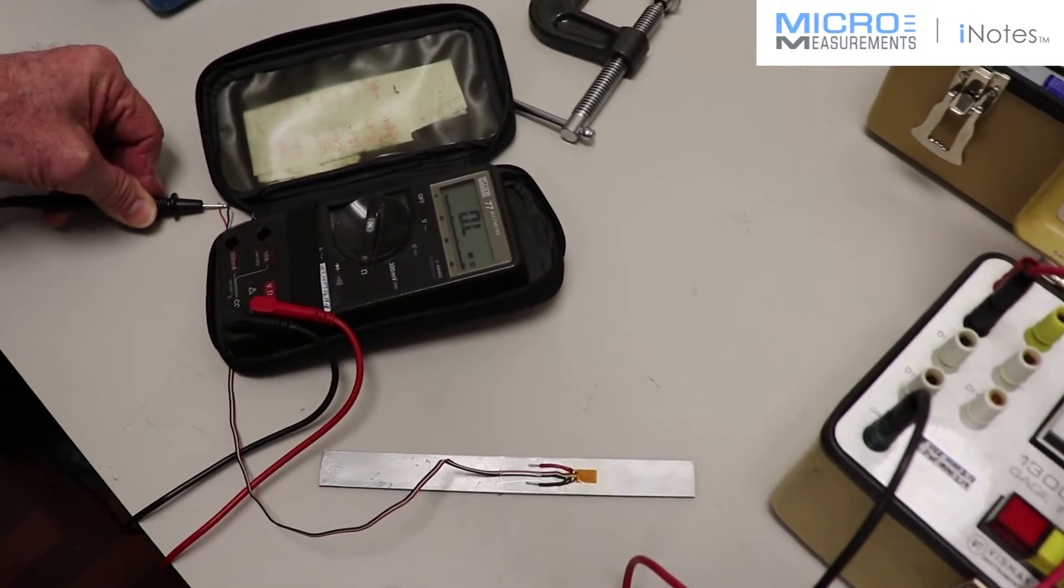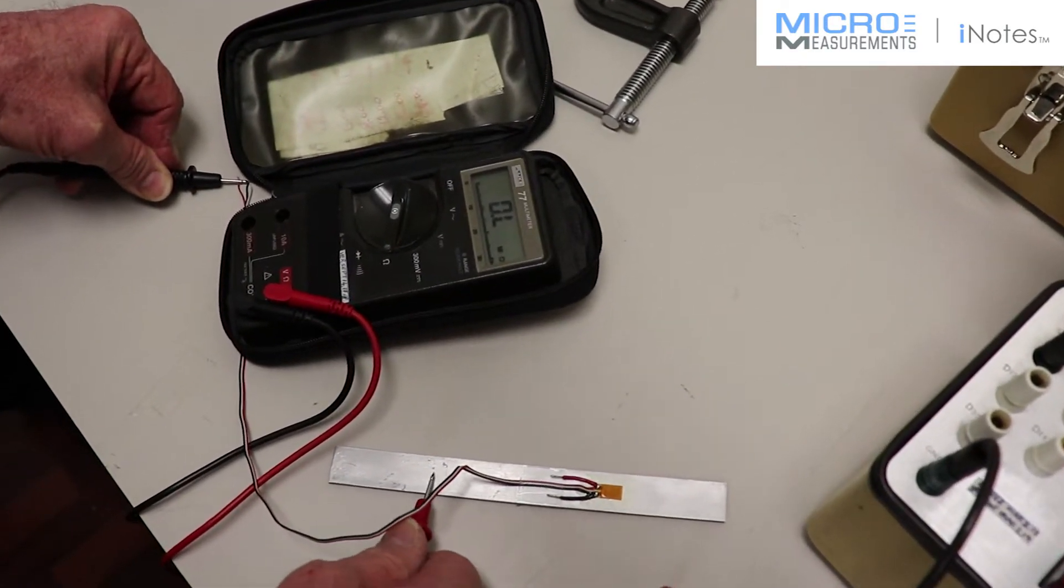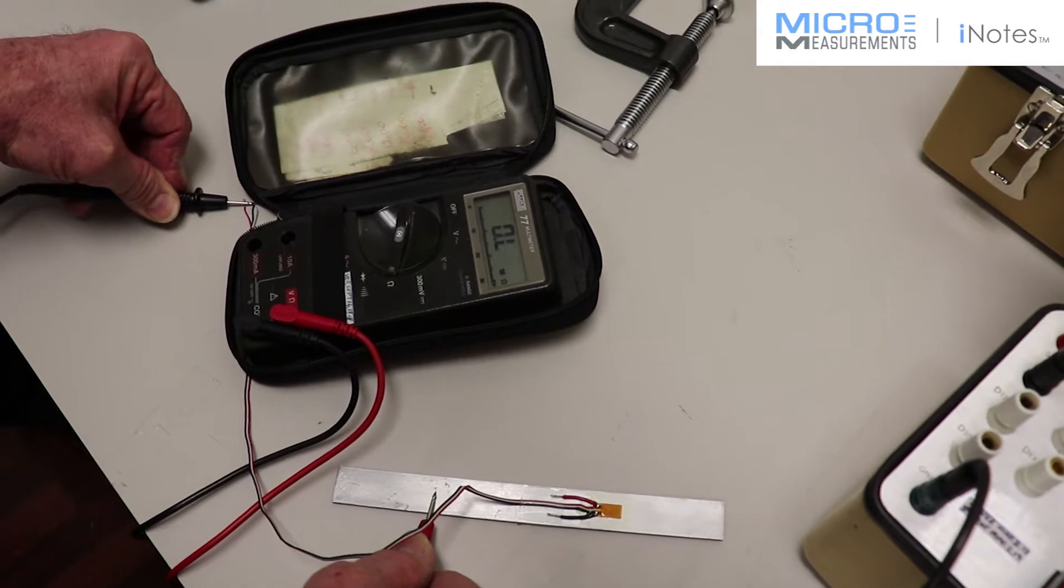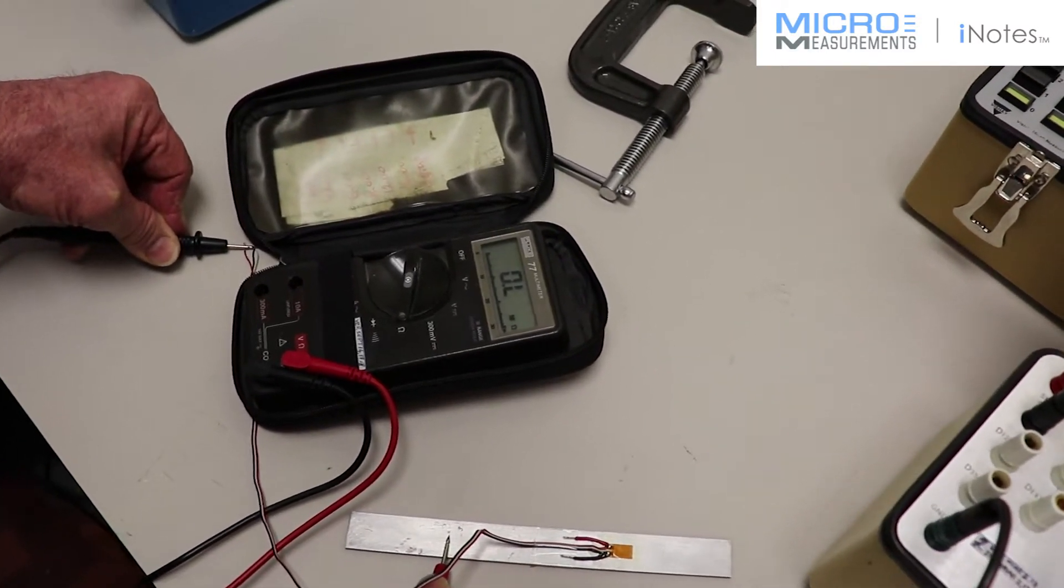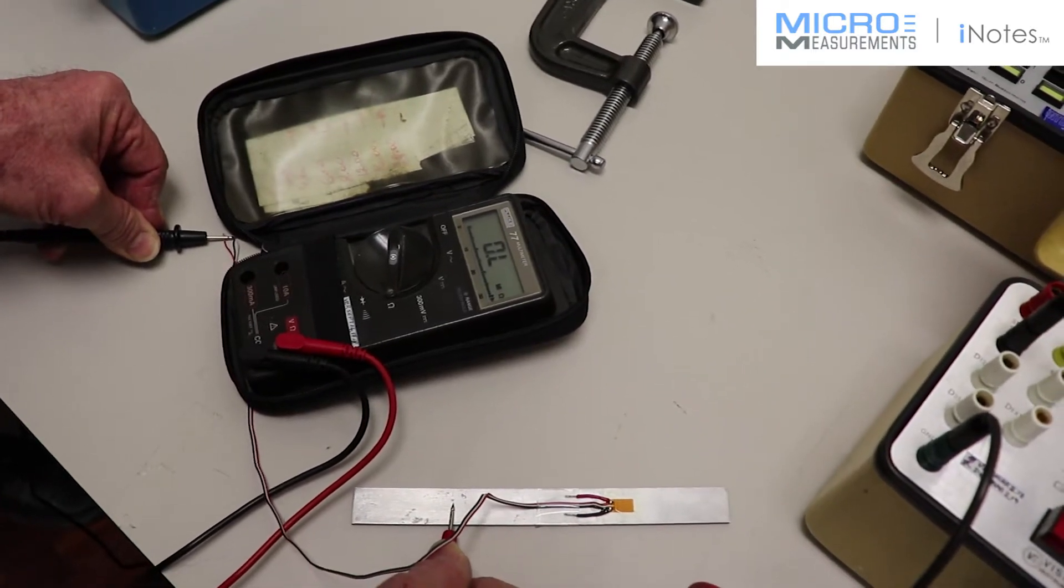We're going to place the other probe on our base plate where the gauge is mounted. And we can measure that as it's off scale. It's reading off scale and the range of measurement is in mega ohms.